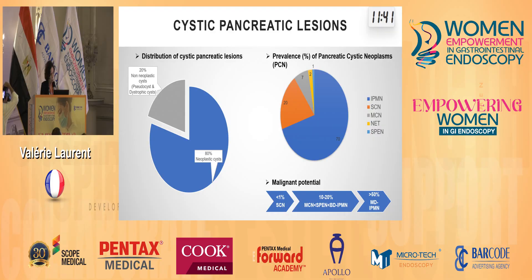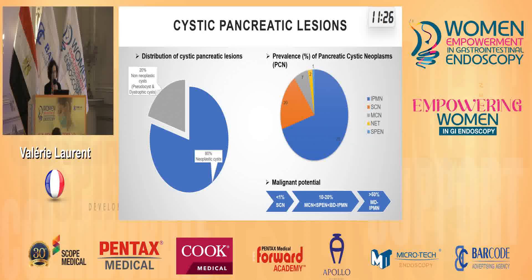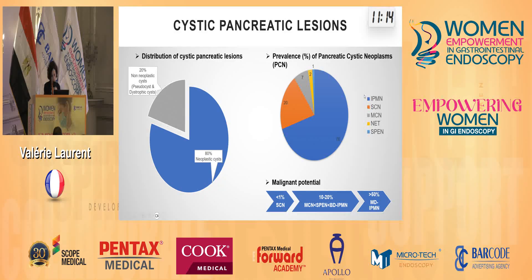These charts show you the distribution of the cysts. In 20% of cases, it would be a false cyst, mainly a pseudocyst or a dystrophic cyst. In this situation, the medical history of the patient will be crucial for an accurate diagnosis. In 80% of cases, it will be a true cyst, mainly IPMN — intraductal papillary mucinous neoplasm — which is a benign lesion. But if the main pancreatic duct is involved, the risk of malignancy exceeds 50%.